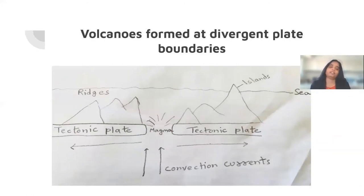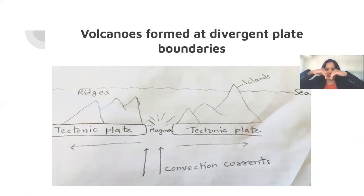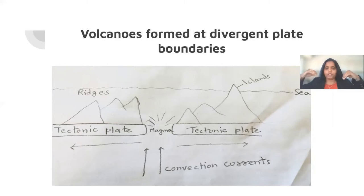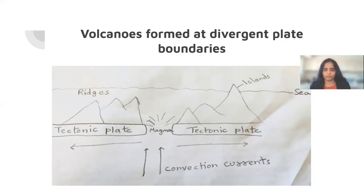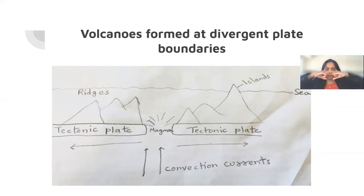At divergent plate boundaries, two plates are moving away from each other. When the convection currents within the asthenosphere diverge, the lithospheric plates diverge. When lithospheric plates diverge, they create a vent — an opening to the asthenosphere. Because the lithosphere has parted, the asthenosphere is exposed and the magma comes to the top. This is also a volcanic eruption. So at divergent plate boundaries, molten magma from the asthenosphere finds a vent and erupts above the surface — that is a volcano.